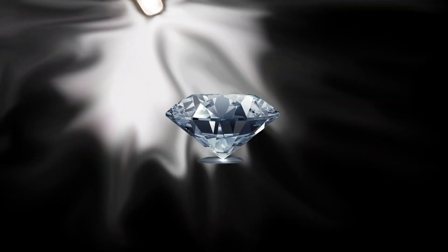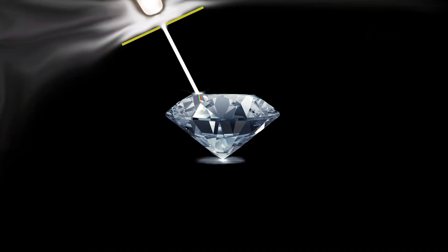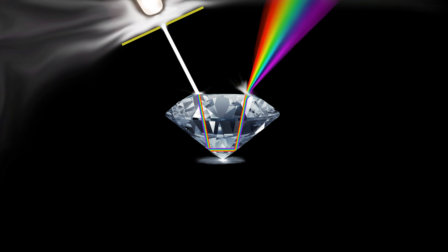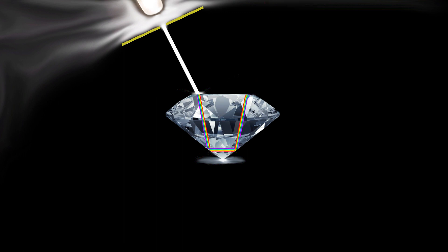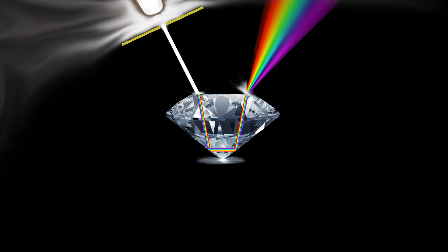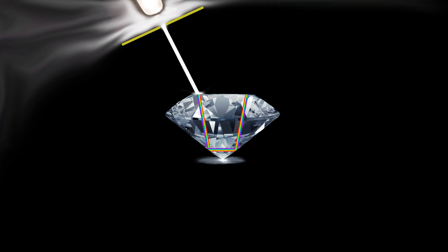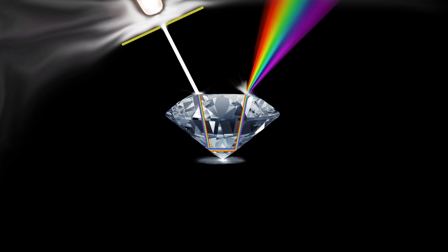The high refractive index of the diamond, which is 2.417, results in a small critical angle of 24.5 degrees, ensuring the trapped light stays within, enhancing the diamond's allure. Additionally, dispersion occurs, separating white light into beautiful colors, adding to its mesmerizing beauty. Diamonds are not only precious gems — they're captivating wonders of nature and science that dazzle us with their brilliance.